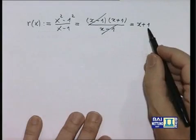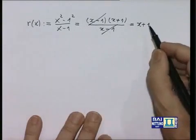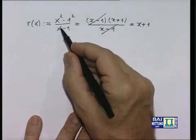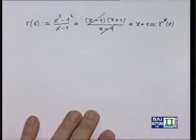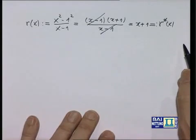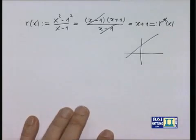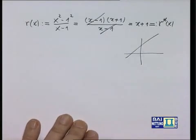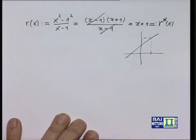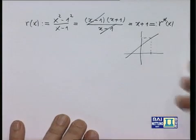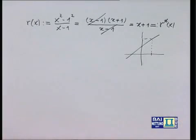Si trova così un'altra espressione per r(x). La funzione r*(x) = x + 1 è un polinomio, definita su tutta la retta reale, anche per x = 1 dove vale 2. Il grafico di r*(x) è la retta passante per (0,1) con inclinazione 1. Per x diverso da 1, r*(x) coincide con r(x). Questo induce a congetturare che anche r(x) per x prossimo a 1 si mantenga prossimo a 2.